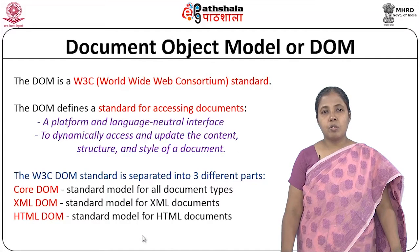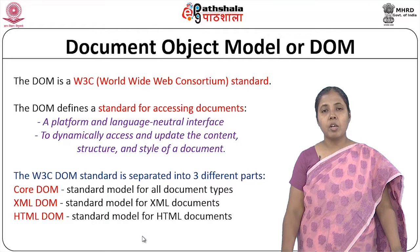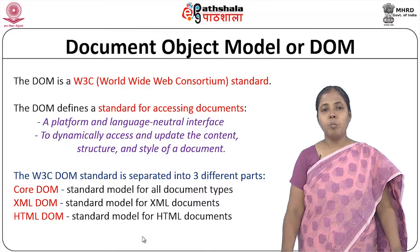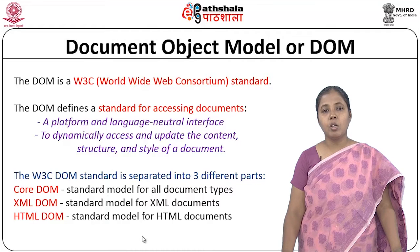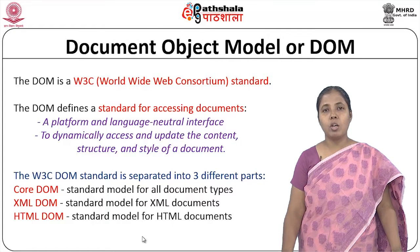We have already seen the Document Object Model or DOM with respect to XML. DOM is a W3C standard for accessing any documents — it can be an HTML document or XML document. This W3C DOM is a platform, also called a language-neutral interface, useful to dynamically access and update the content, structure, or style of any document. The W3C DOM is separated into three parts: Core DOM — a standard model for all document types; XML DOM — a standard model for XML documents; and HTML DOM — a standard model for all HTML documents.